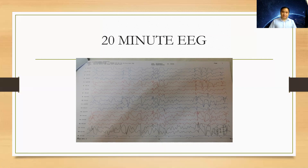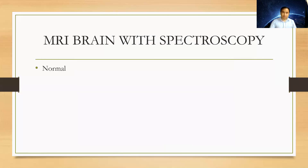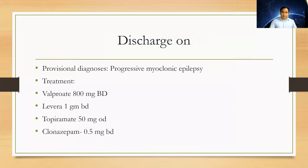There is epileptiform discharge coming from all parts of the brain. We also did MRI brain with spectroscopy, which was normal. We made a provisional diagnosis of progressive myoclonic epilepsy, probably Lafora body disease.